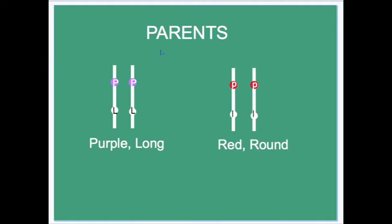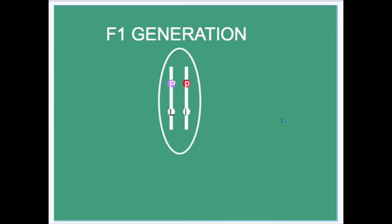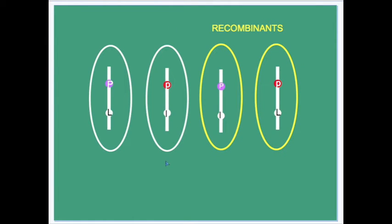In conducting an investigation along the same lines as Mendel's, when these pure breeding plants were crossed, these were the gametes produced and this was the genotype of the F1. Upon selfing the F1, these were the possible gametes, with big P little l and small p little l being the recombinants. Recalling that if this inheritance were following a normal Mendelian pattern, then the probability of getting these gametes would be the same as the probability of getting these.